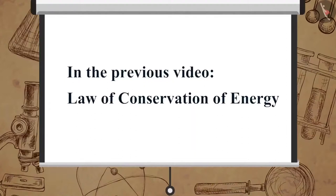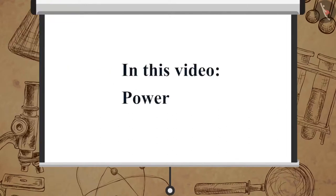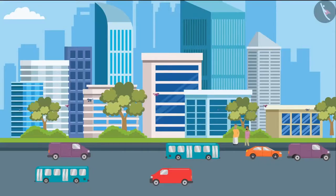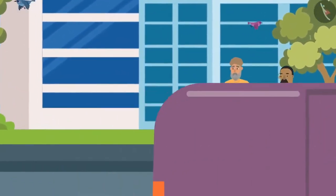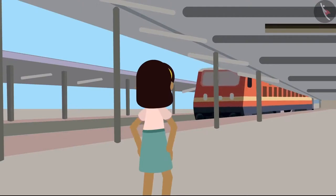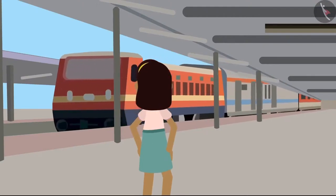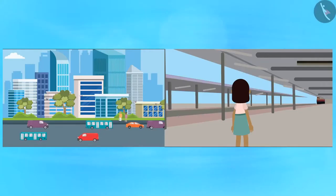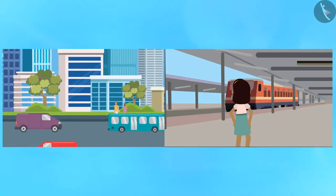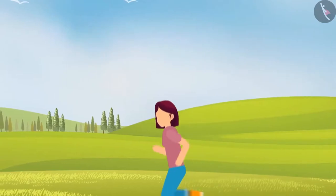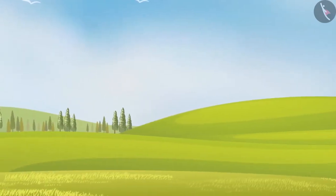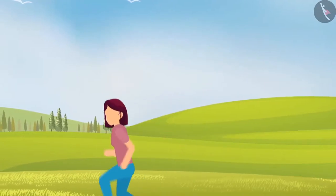In the previous video we learned about the law of conservation of energy. In this video we will learn about power. Do you think all human beings do their work at the same rate, or do all machines consume and transfer energy at the same rate? The rate of doing work varies with all individuals, and different machines also work at different rates. Let us have a look at a simple activity to understand how the rate of doing work varies.